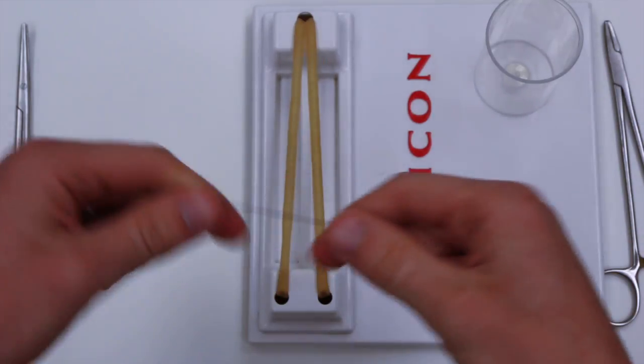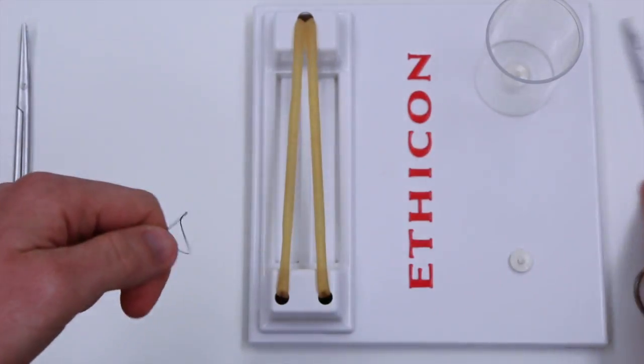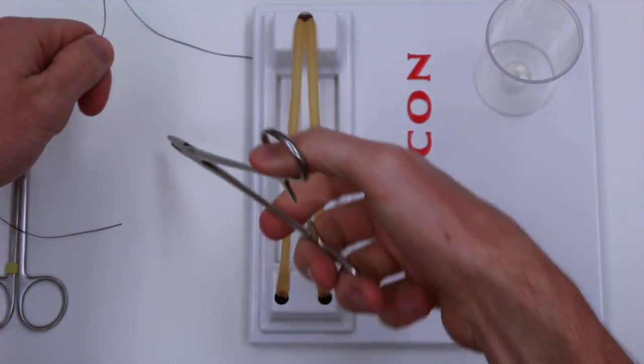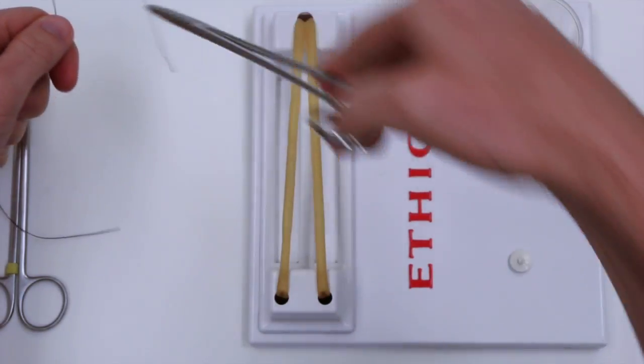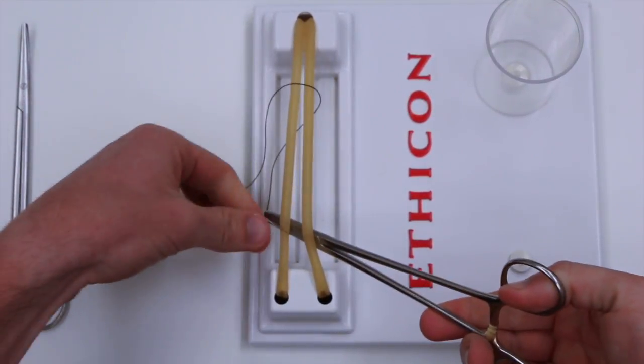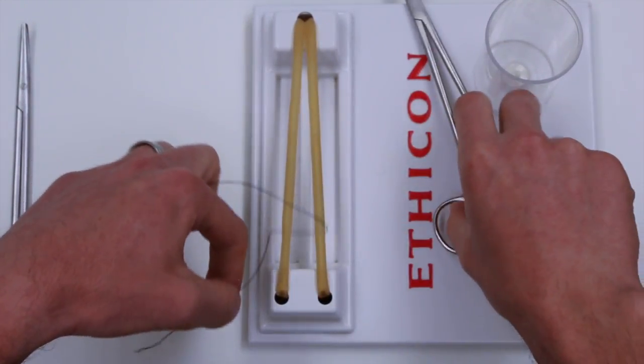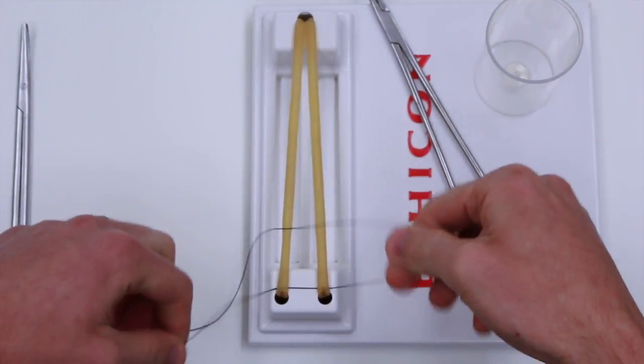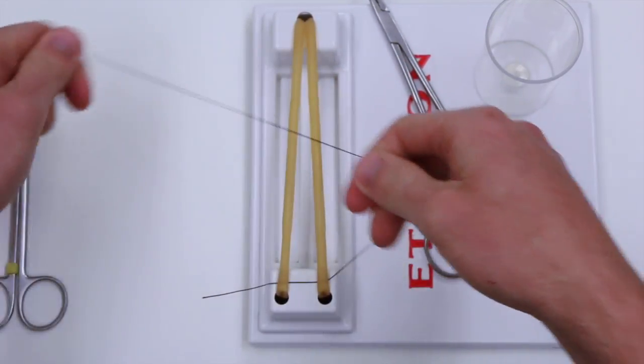So for this get your suture, your needle driver, in this case we'll theoretically pass it through the tissue and then I'm just gonna wedge it under there so my tail is where I can get at it.